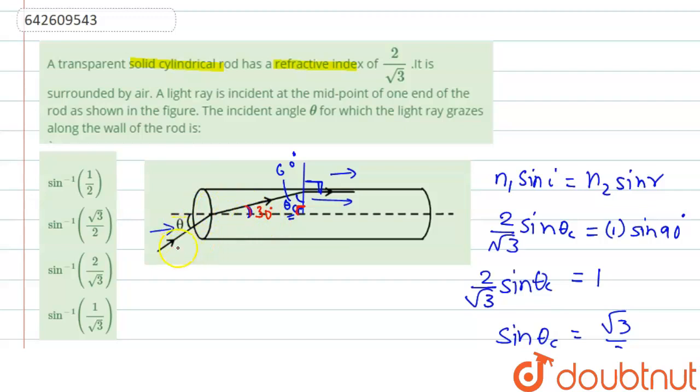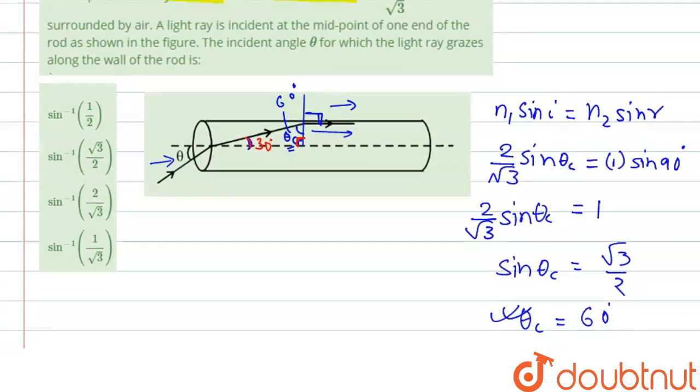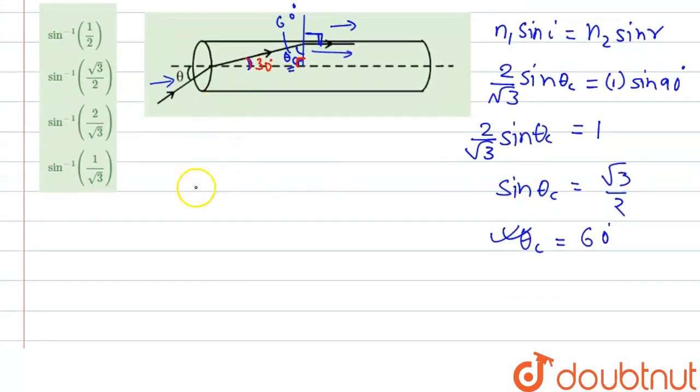Now we have this angle so we can take the refraction at this point. So again we apply Snell's law here. It will be N1 sin i equal to N2 sin r. So here the ray is moving from air to the material, so for air it is 1 and sin i that is we have to find, let's say this is theta.